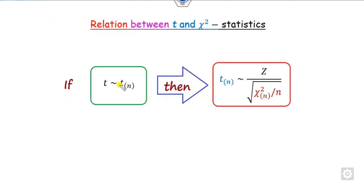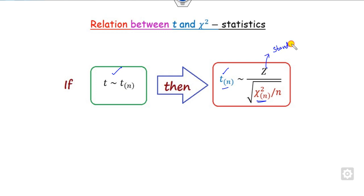Once we have seen the importance of the T test and the chi-square, we can analyze what is the relation between them. If T follows the T statistics, then the relation between the chi-square and the T statistics is given here, where z is called the standard normal variate.